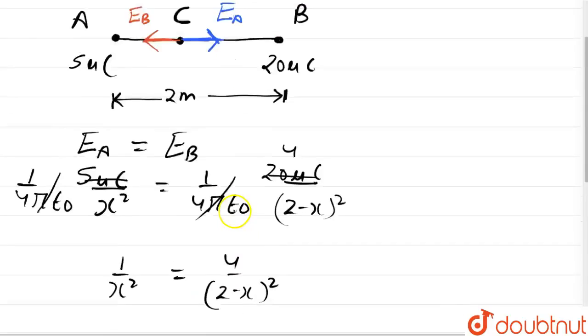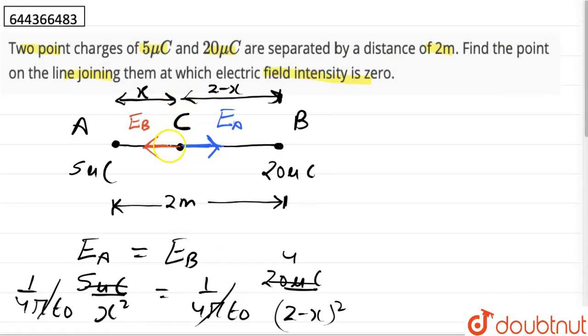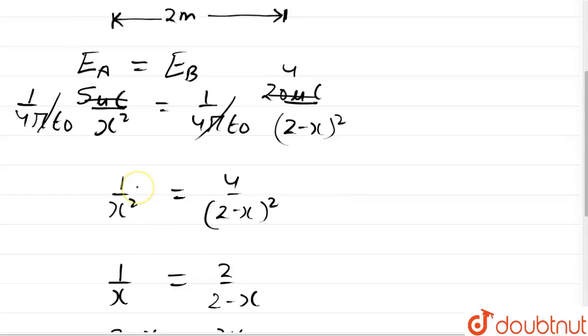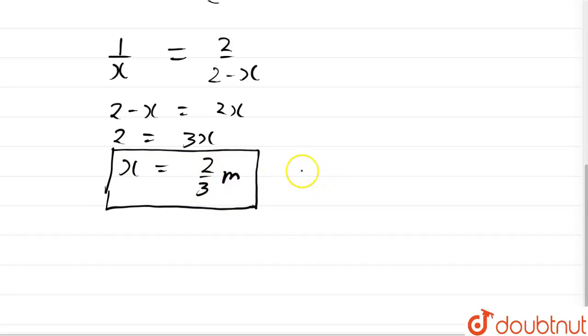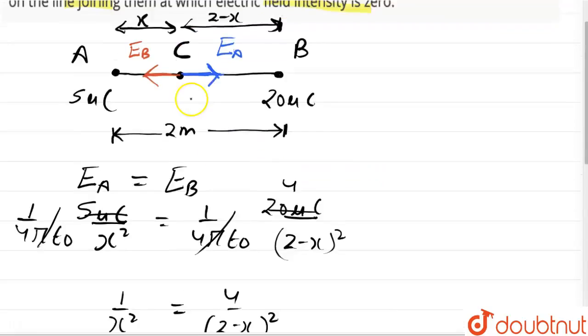Now x is the distance of the point C, the null point, from the charge plus 5 micro coulomb. So our complete answer would be the point at which electric field intensity is 0 is 2 by 3 meters from 5 micro coulomb charge. Okay, this is our complete answer. Thank you.